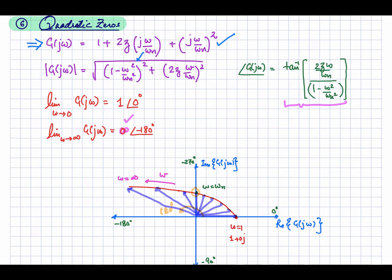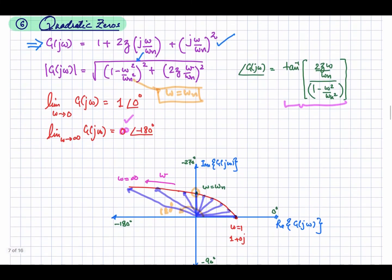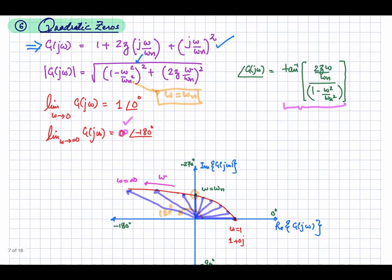The polar plot crosses the imaginary axis when the real part equals zero, which occurs when omega equals omega_n. So at frequency equal to the natural frequency there is a crossover at the positive imaginary axis for the quadratic zero. In summary, this video has discussed the polar plots of quadratic poles and quadratic zeros.